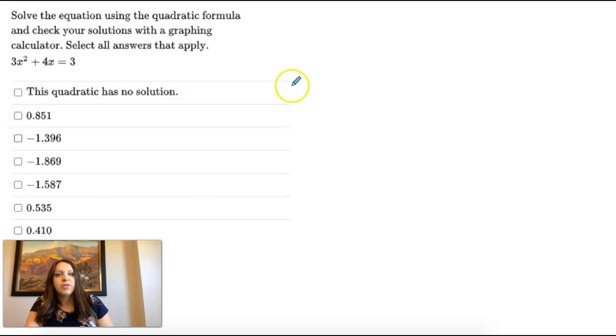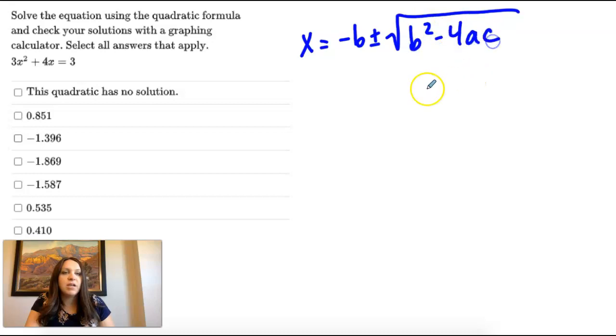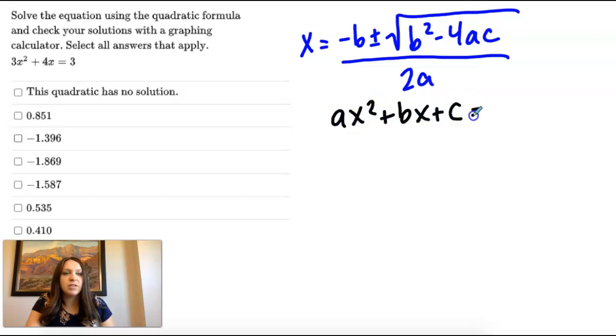So first, I'm going to just copy down the quadratic formula. Negative b plus or minus the square root of b squared minus 4 times a times c, all divided by 2a. And then I'm going to remember my standard form, ax squared plus bx plus c equals 0.